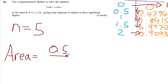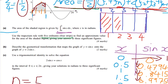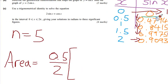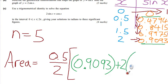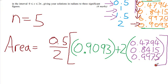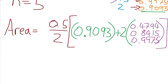The area is equal to a half over two, times by the first term and the last term. The first one is 0, and the last one is 0.9093. Then plus two times all the rest of the terms added together. So that's this one here, this one, and this one. We're going to write in 0.4794, 0.8415, and 0.9975. So two times all of those. And then we can use our calculators to work that out.